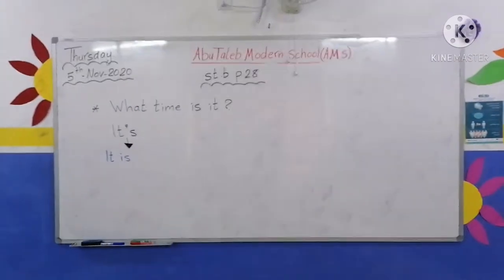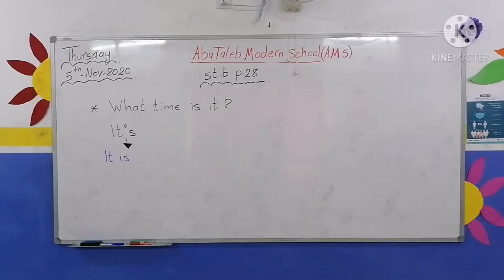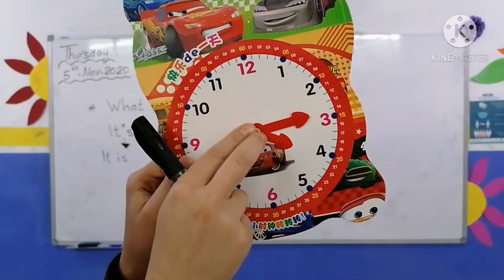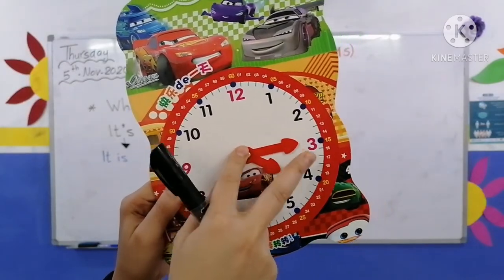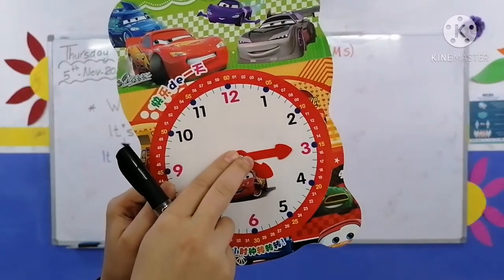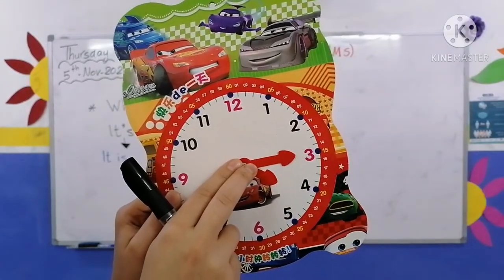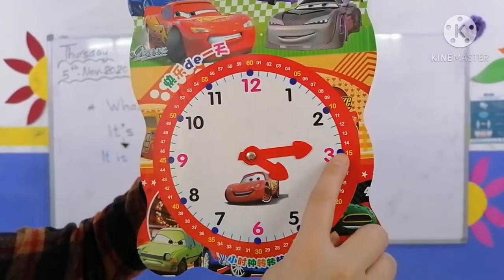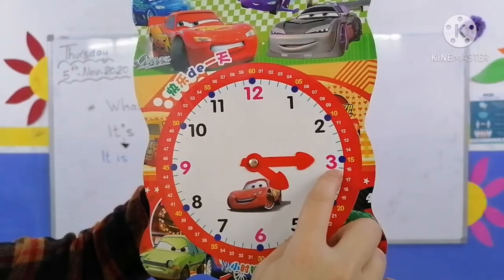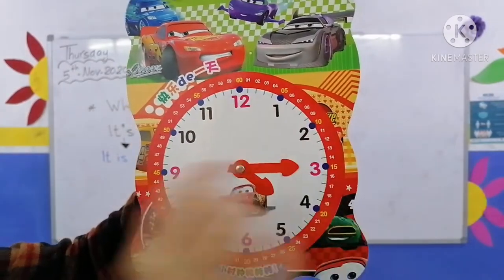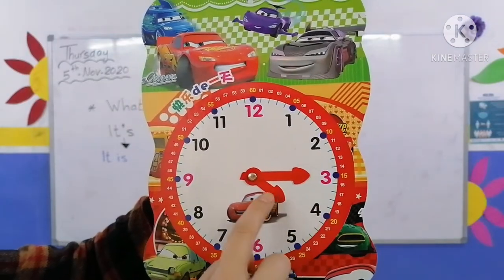Now, what time is it? It's four fifteen. The big hand is on three and the small hand is on four, so it's four fifteen — meaning الرابعة والربع (quarter past four). When the big hand is on three, it means fifteen — a quarter of the hour.